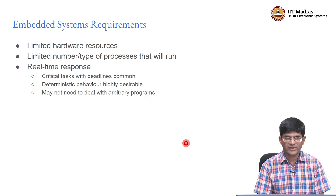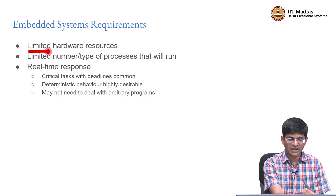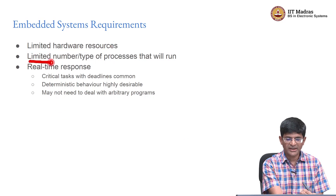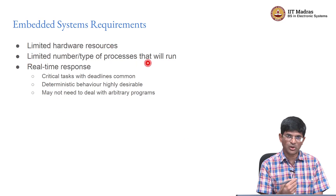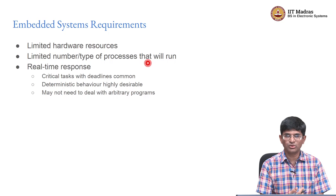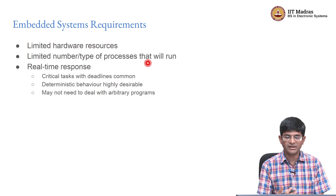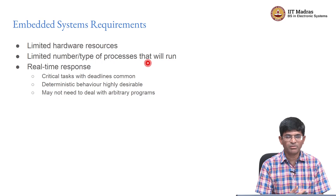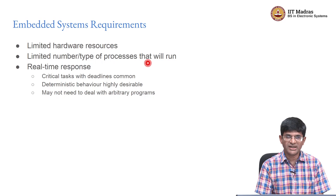Embedded systems have more specific requirements. Typically they have limited hardware resources and a limited number and type of processes that are going to run on them. You are unlikely to run a spreadsheet, a browser, a video player, and games all at the same time on an embedded system — it would be designed for one primary purpose, and you do not normally expect the user to switch between arbitrary tasks at any point in time.